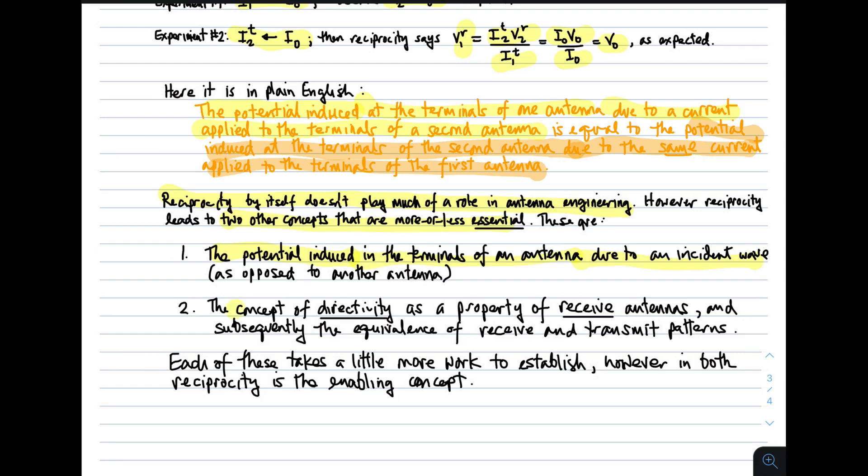Second, the concept of directivity as a property of receive antennas. Directivity is most naturally described as a property of a transmitting antenna. It says how much power density is produced in a particular direction relative to the average power density radiated in all directions. It's not obvious how you can describe or define directivity for a receive antenna, but reciprocity gives you a handle on that idea. This is a common thing. It's a thing that people often refer to, but it takes a little bit of work to go from the concept of reciprocity to the notion that the directivity can be a receive property of antennas. And this, too, will be addressed in a different lecture.